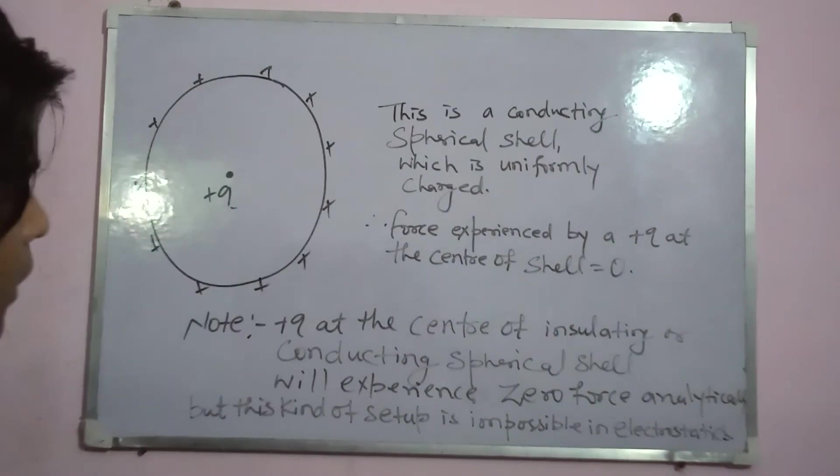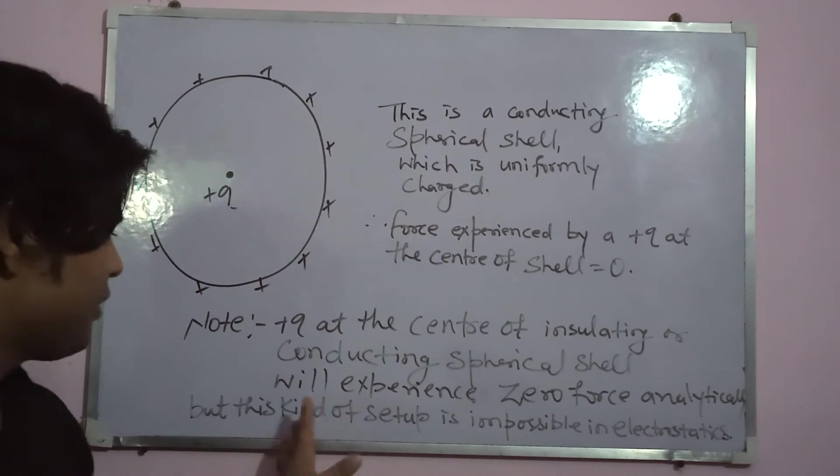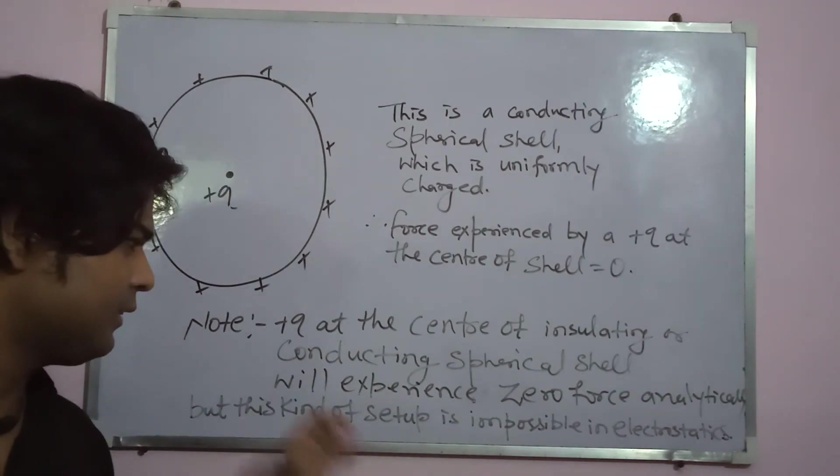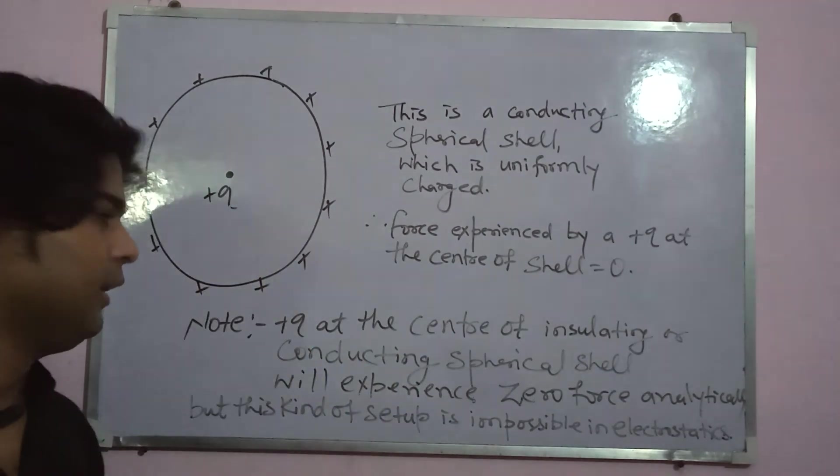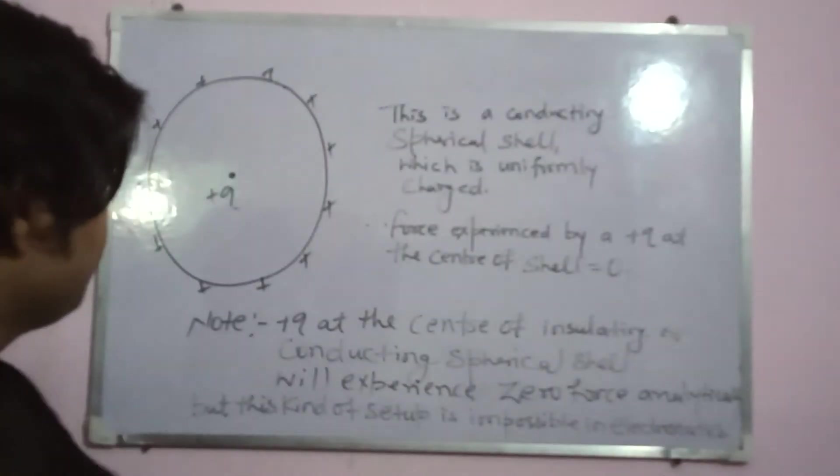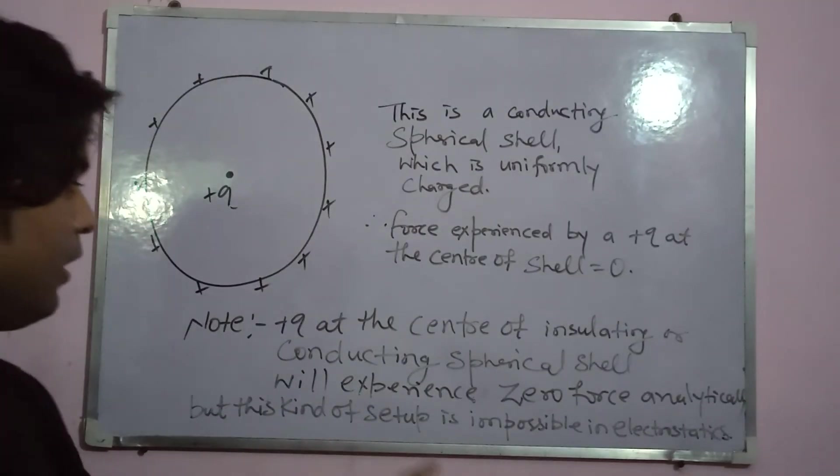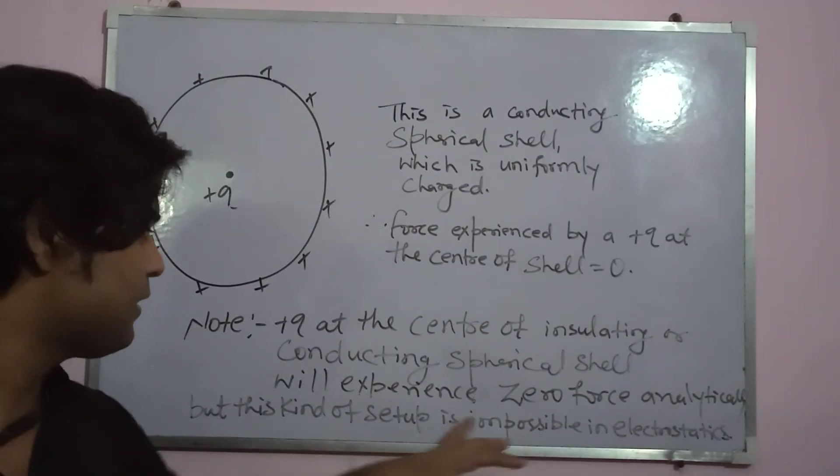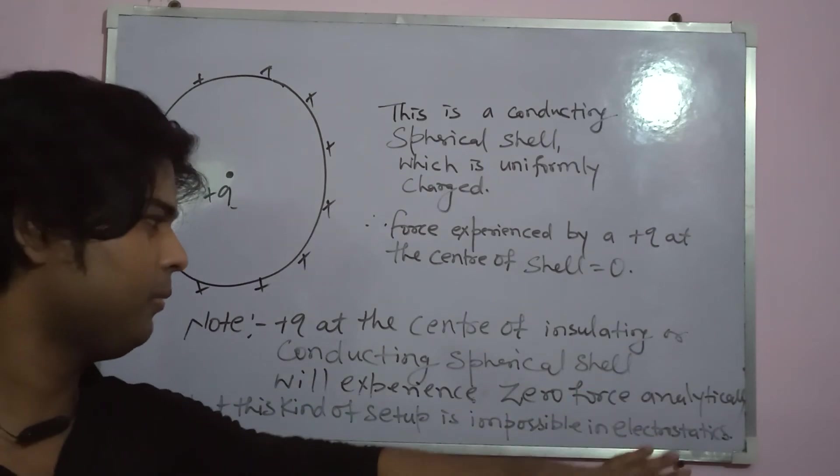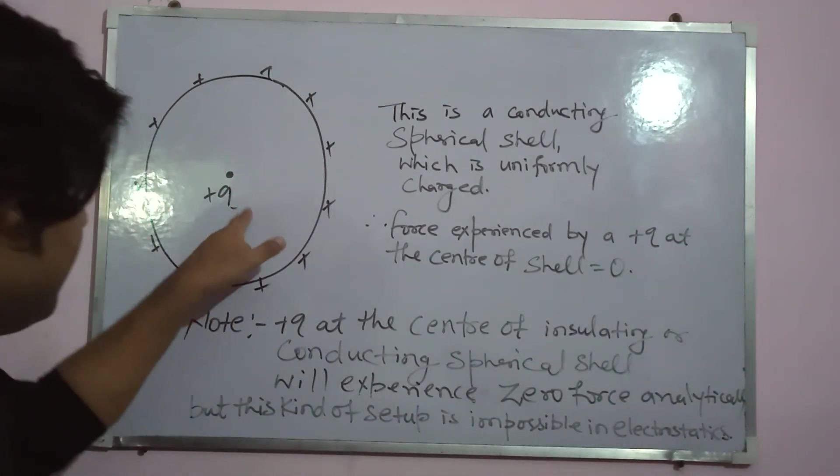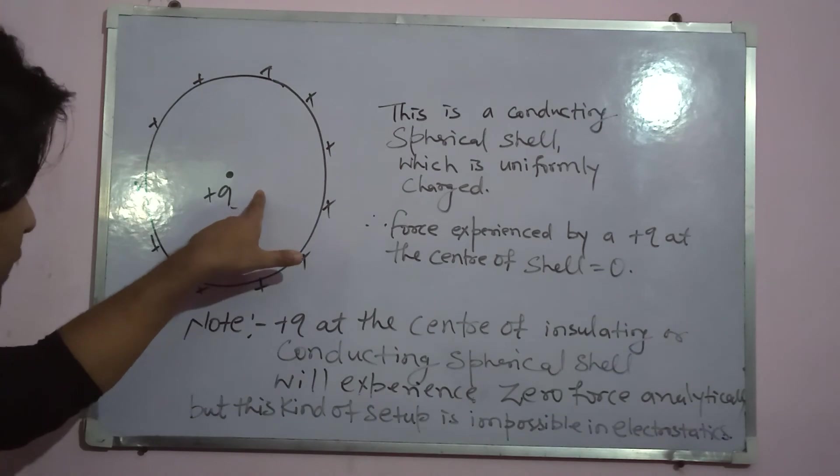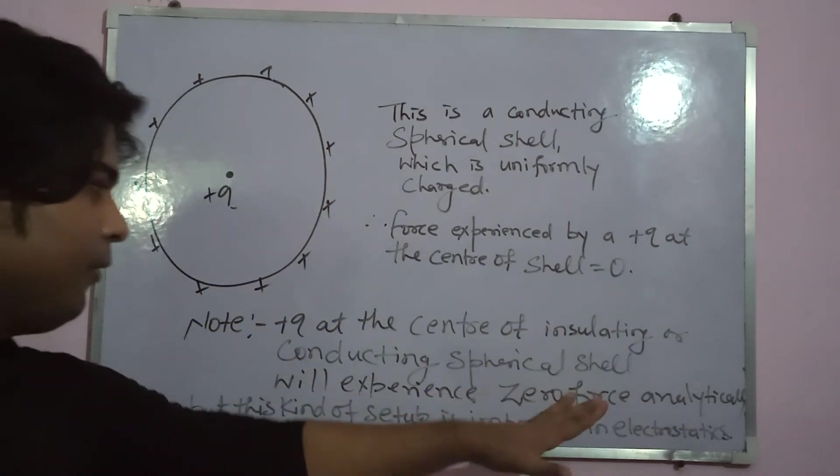But, analytically, we can see that force is zero here within this conducting spherical shell and within an insulating spherical shell. But, remember, electrostatics does not provide a stable equilibrium inside this setup. So, we can say this kind of setup is impossible in electrostatics. But, analytically, quantitative analysis gives us that the force is zero.